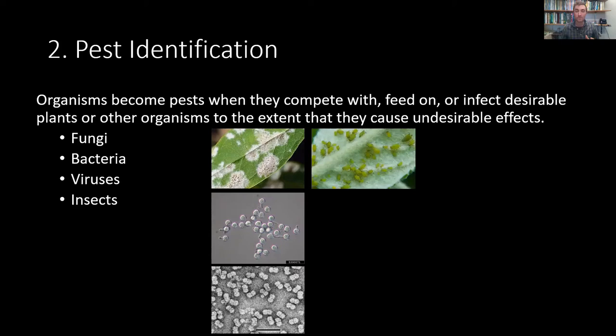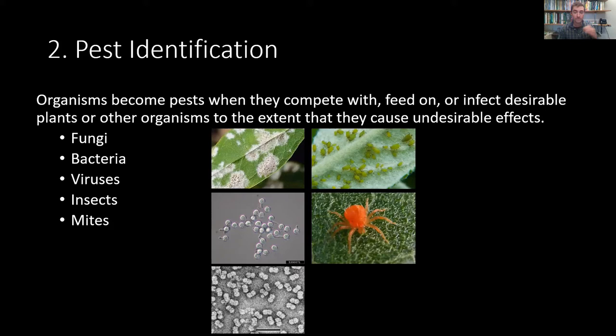A big category of pests in the landscape are insects. Insects are a subcategory of arthropods — anything with six legs and segmented bodies. Aphids are a classic example, along with beetles, ants, bees, and flies — they're all insects. So most of what you think of as bugs or creepy crawlies are a whole category in and of themselves of pests or potential pest organisms.